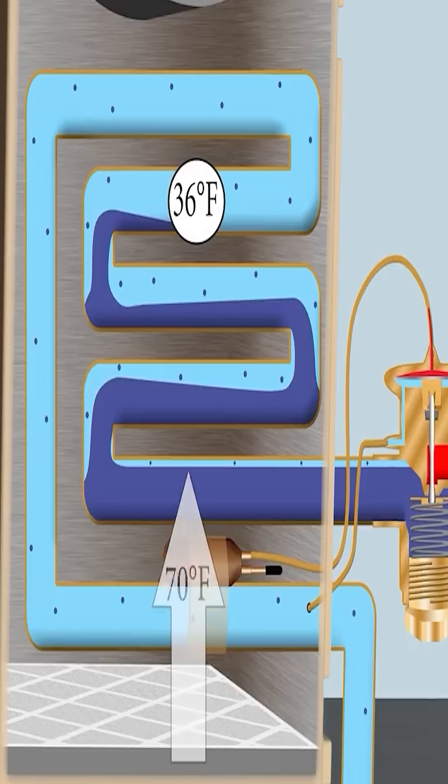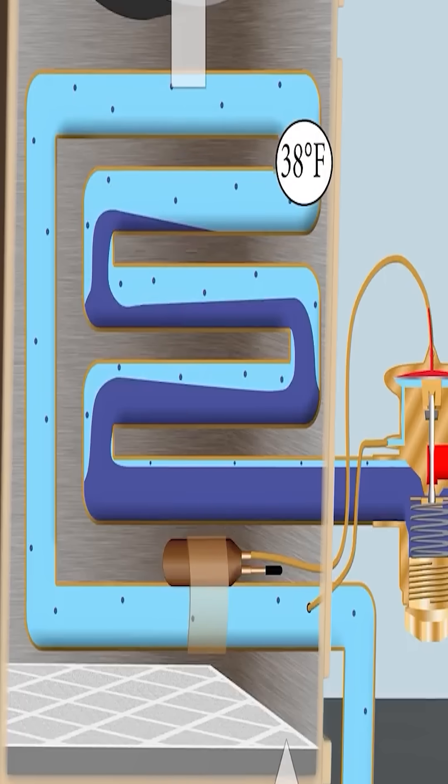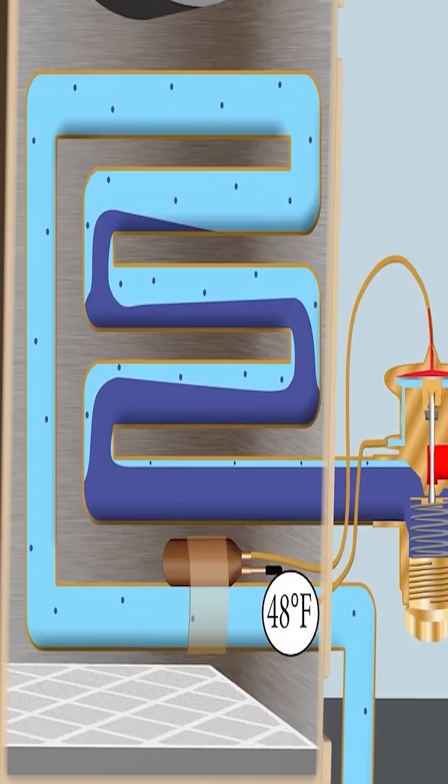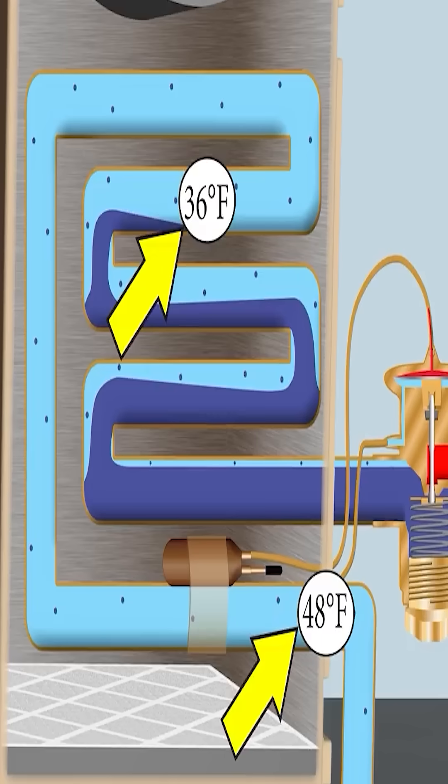But anyway, you have 36 degrees here and it's going to increase in temperature as the vapor travels through the refrigerant tube until it comes out of the coil right over here at 48 degrees. So 48 degrees minus 36 degrees, that's 12 degrees of superheat and superheat is the temperature increase of the vapor refrigerant.